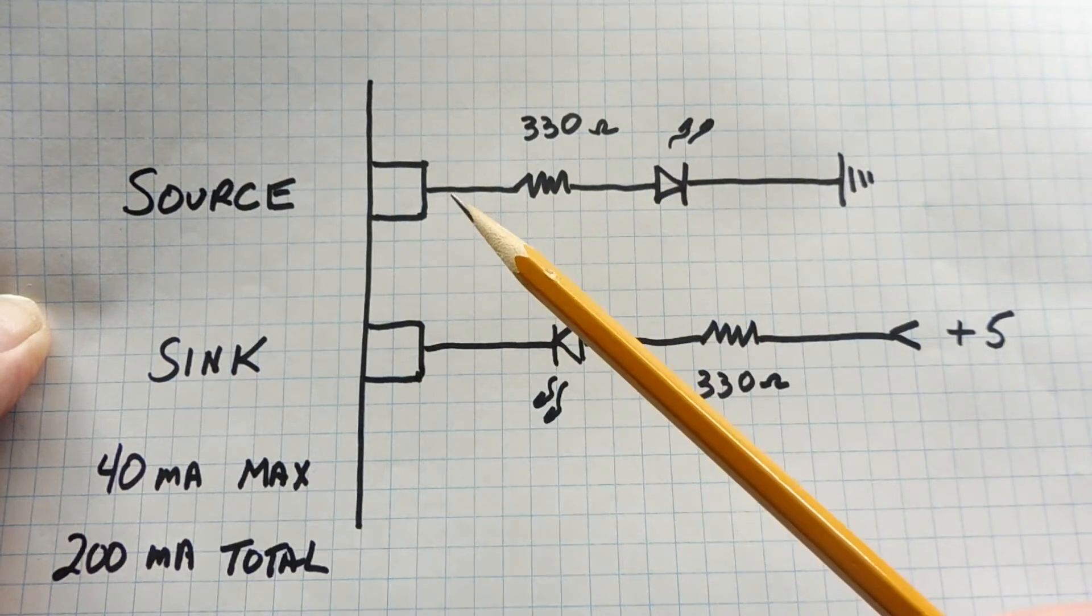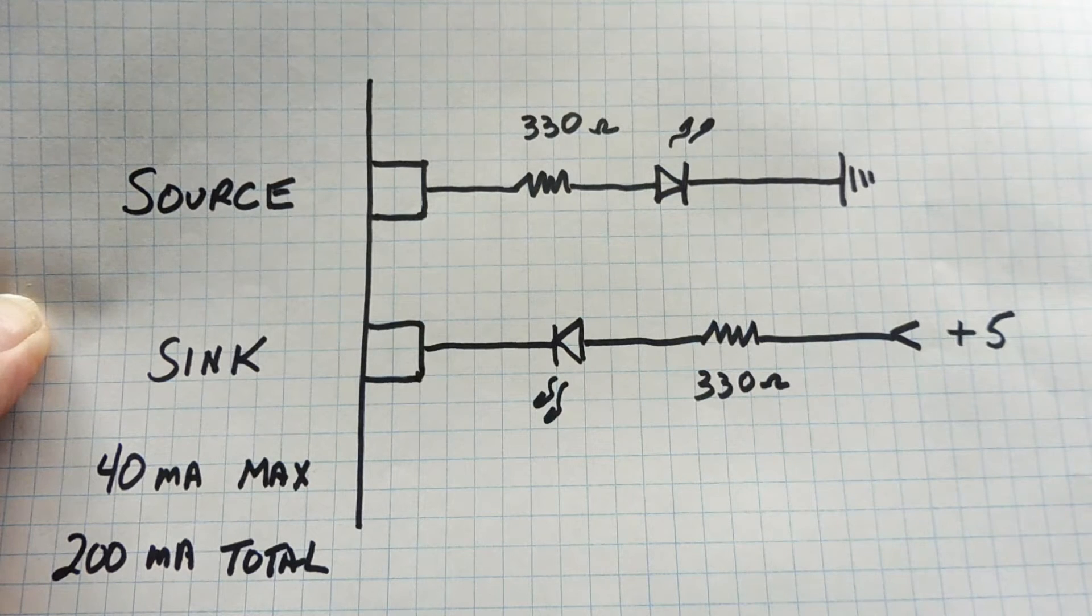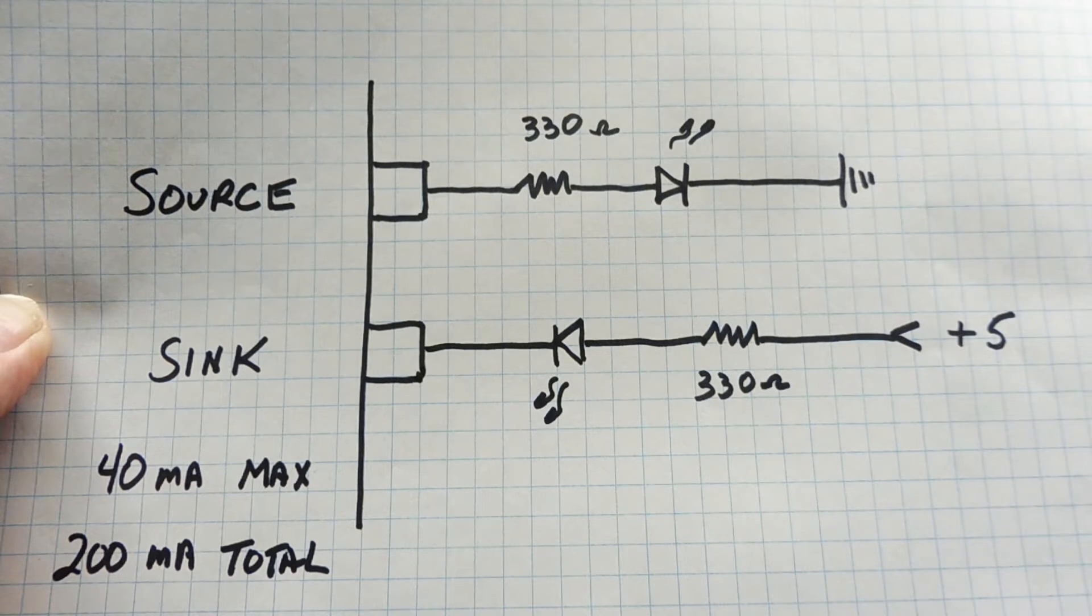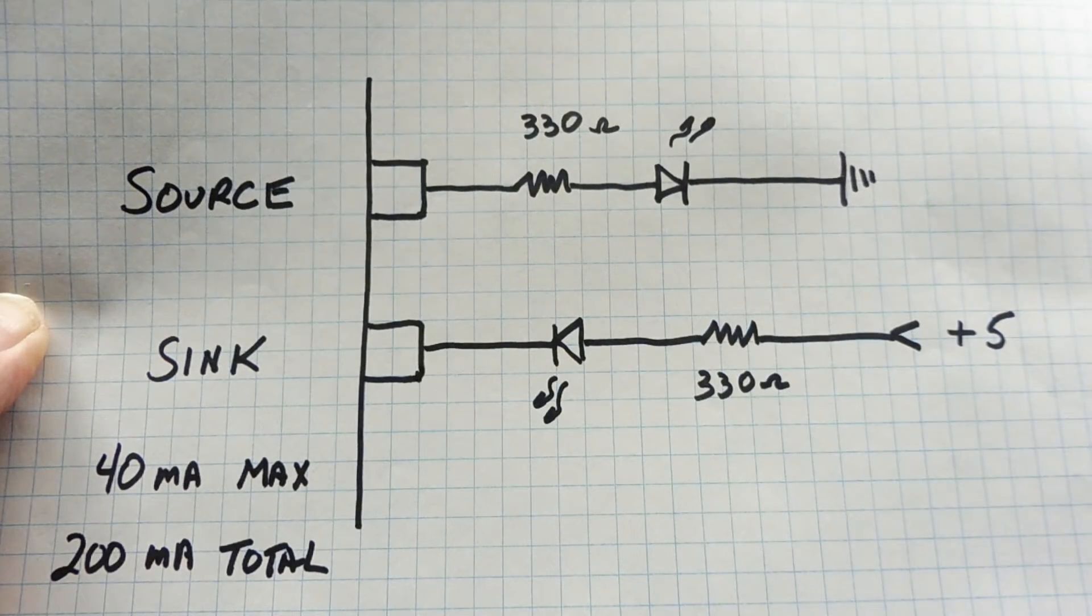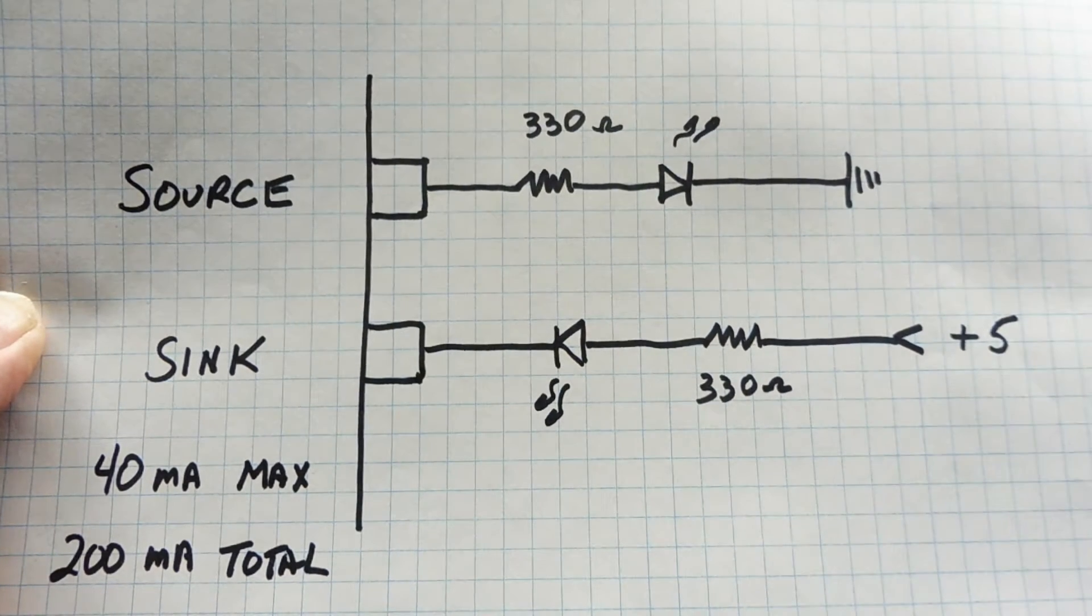The maximum source or sink current of any pin is 40 milliamps, and the total GPIO pin current is 200 milliamps. So you can see with the amount of GPIO pins, you can exceed that pretty quickly.